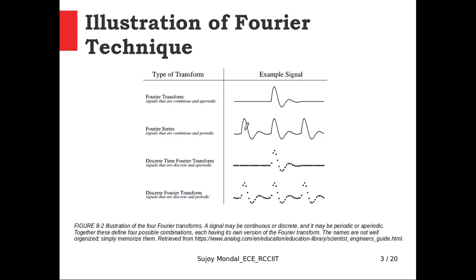We will now find out the proper techniques to analyze the signal spectrum. This is an illustration of different signals and their associated Fourier analysis techniques. In the right column there are four categorical signals. The first is aperiodic and continuous — the corresponding technique is the Fourier Transform. For continuous-time periodic signals, we use the Fourier Series to get the frequency spectrum.